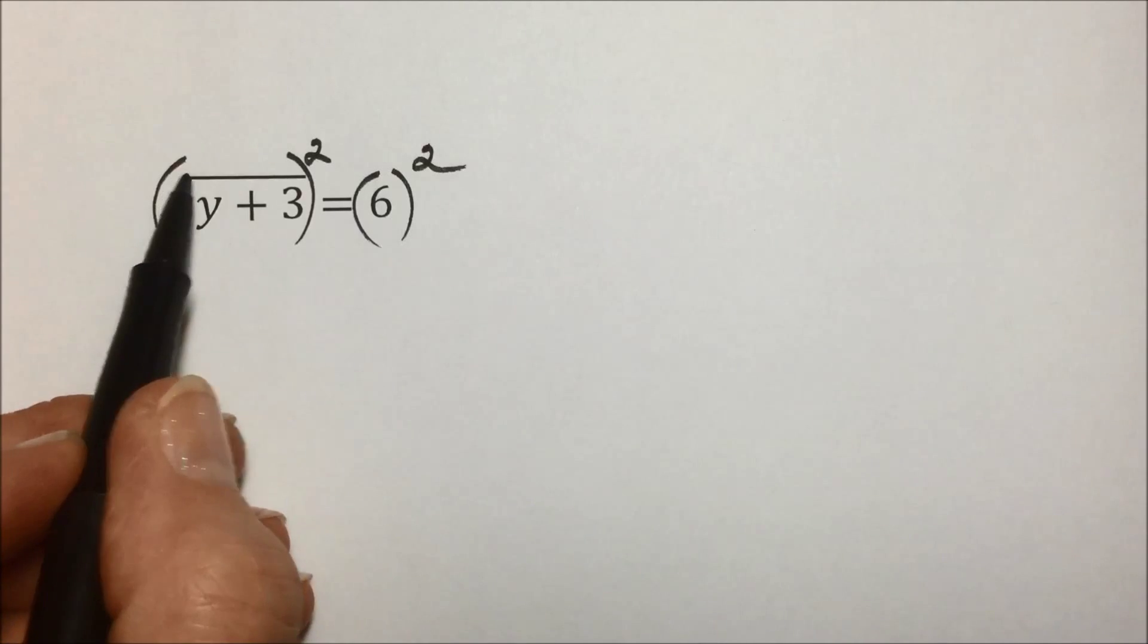In this next problem, our first step always is to isolate the radical. That's already done for us. To undo a square root, we will square it, and what we do to one side, we do to the other using the principle of powers. Squaring a square root, or a radical with an index of 2, means we are going to get our radicand on the right-hand side. 36 is the result of 6 squared, and the only thing left to do to get y or our variable by itself is to subtract a 3 from each side, and we end up with y is equal to 33.